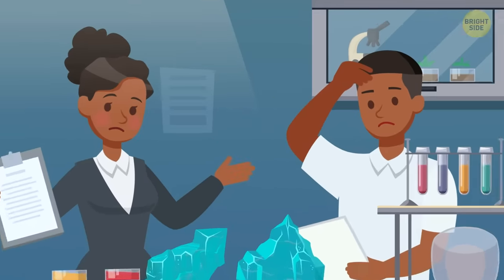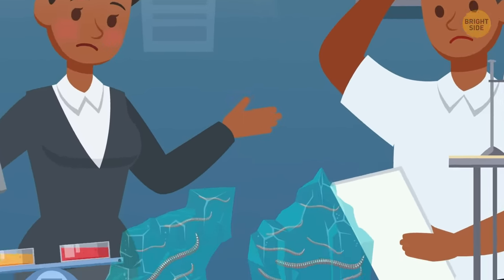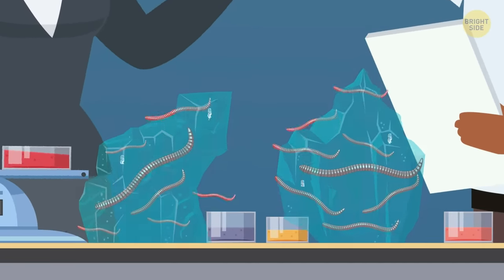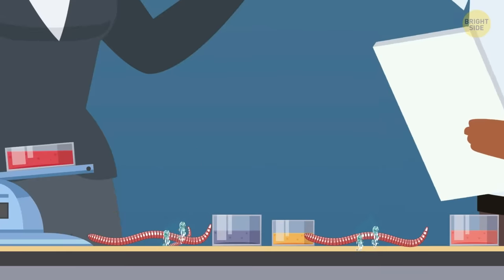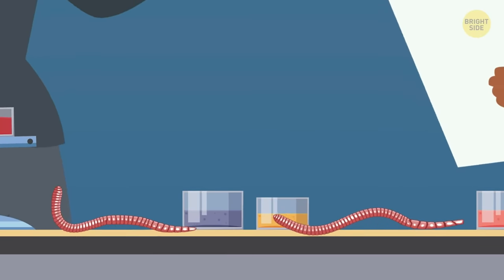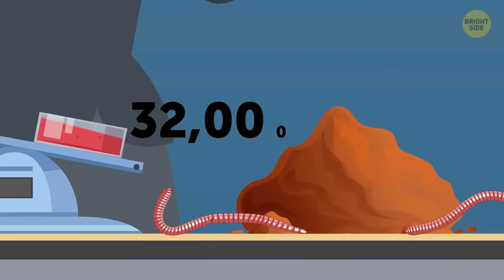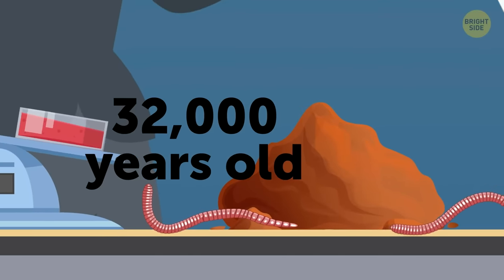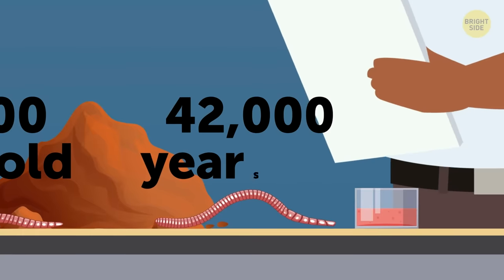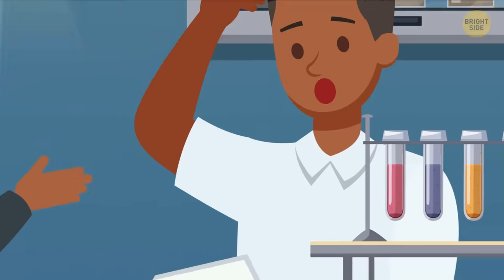In 2018, scientists collected 300 frozen prehistoric worms in the Arctic. When all the worms were defrosted, two of them woke up. They started to move and even had a meal. One of the unbelievable creatures was about 32,000 years old, and the other was almost 42,000 years old. Both were fairly confused.